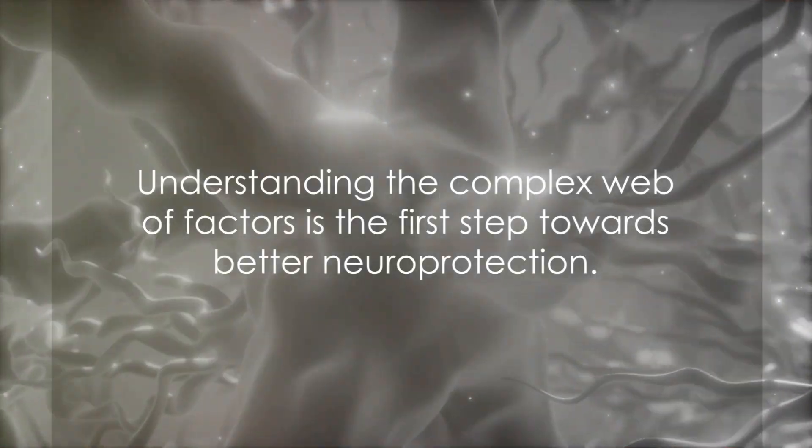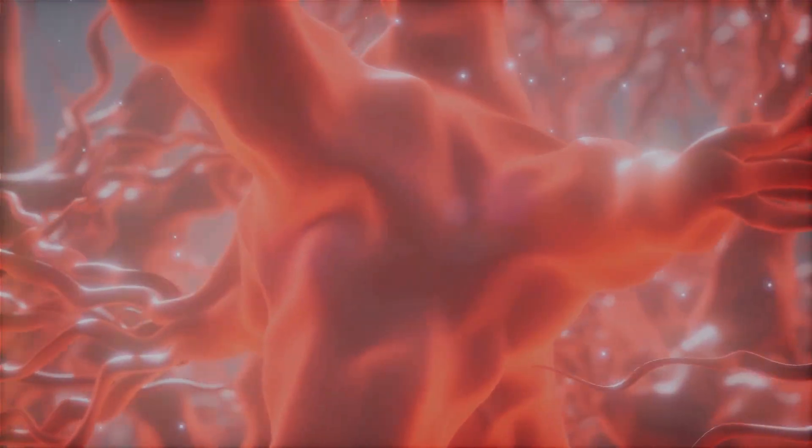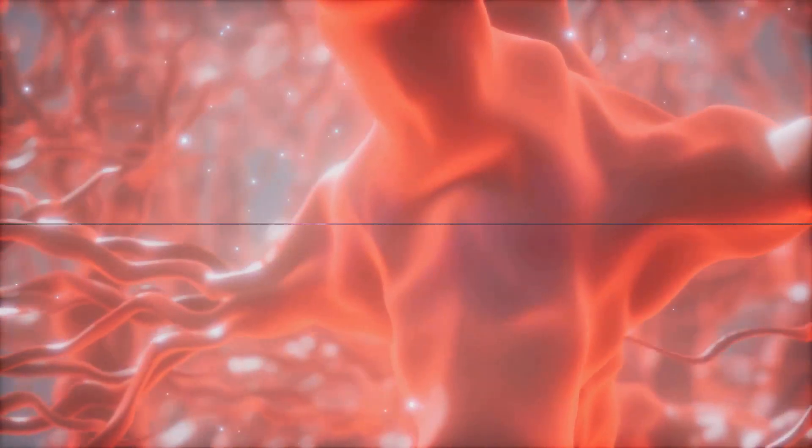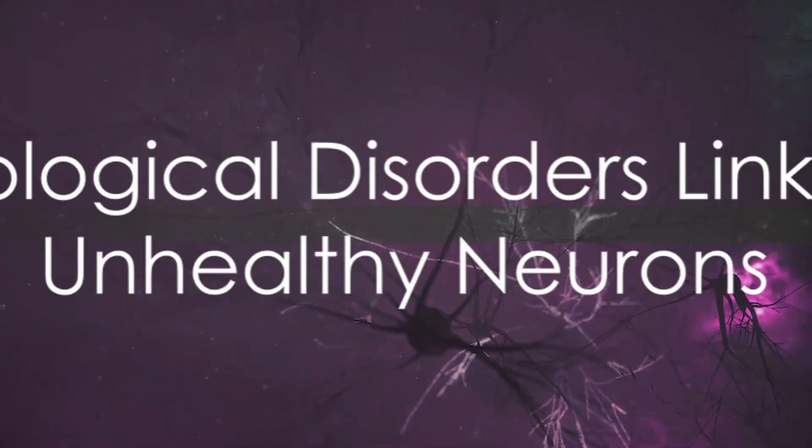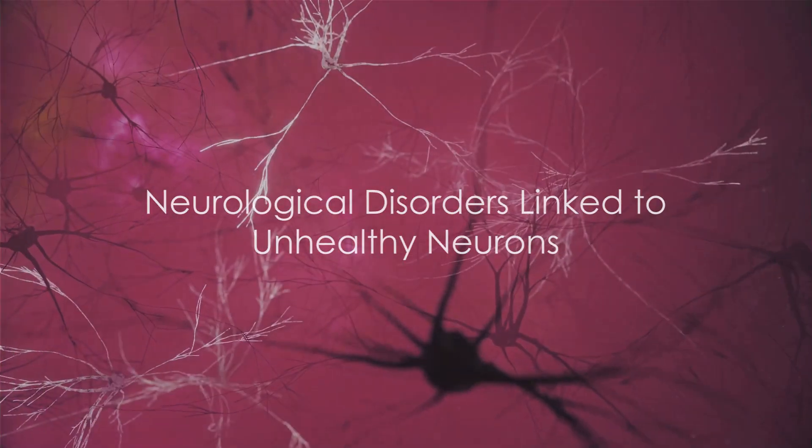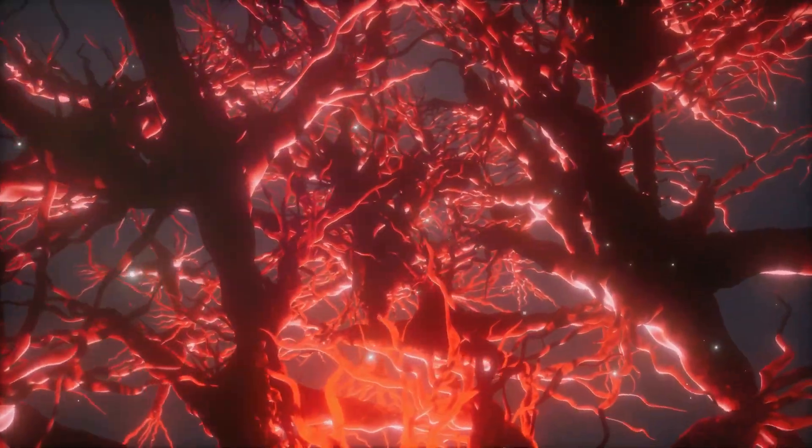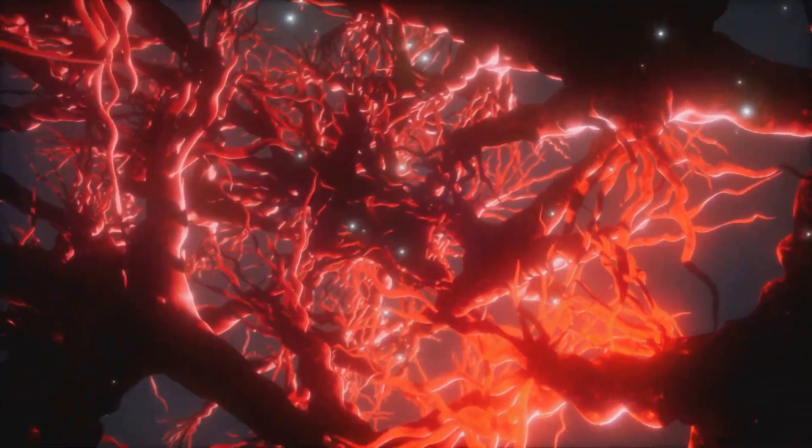It's a complex web of factors, but understanding these is the first step toward better neuroprotection. What happens when our neurons are not in the best shape? Unhealthy neurons can lead to severe neurological disorders like Alzheimer's and Parkinson's.